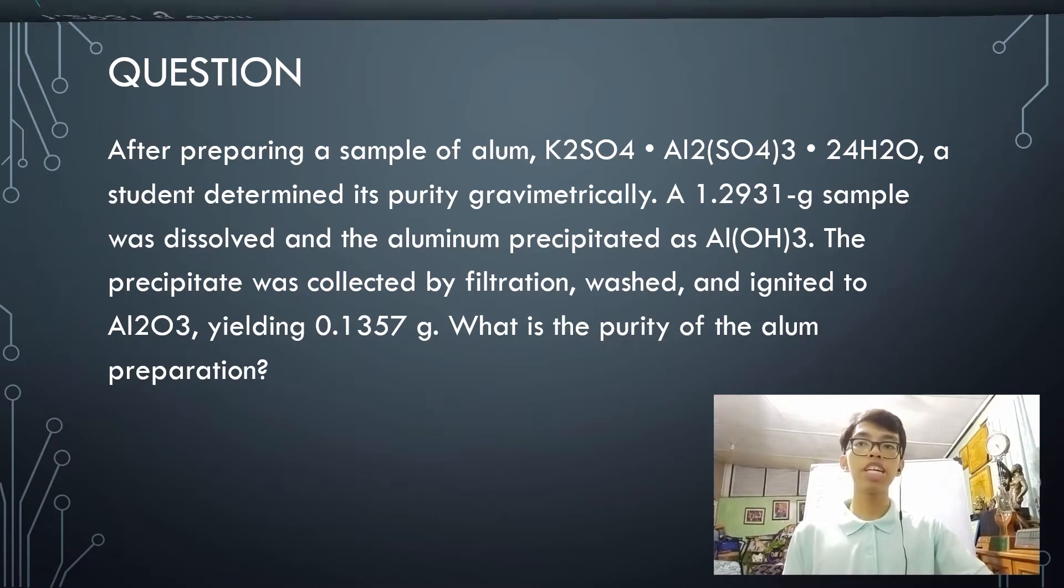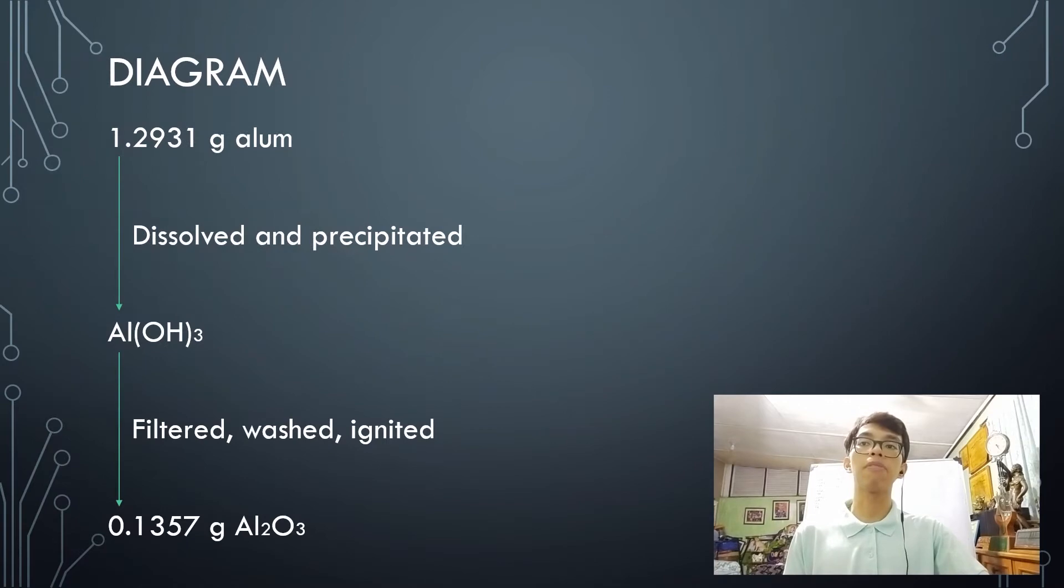Now here, I have a sample diagram. Now as you can see, in the initial, you have here 1.2931 grams of alum. Now this initial amount was dissolved and precipitated into aluminum hydroxide. Now that aluminum hydroxide was further filtered, washed, and ignited into aluminum oxide. And it yielded 0.1357 grams of aluminum oxide.